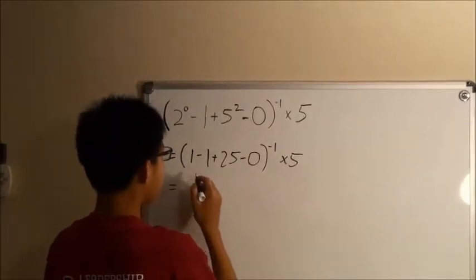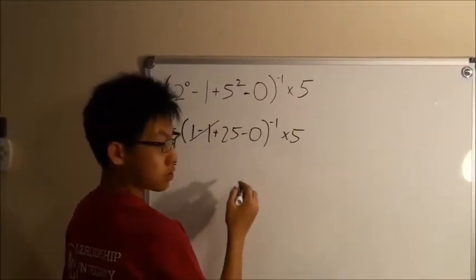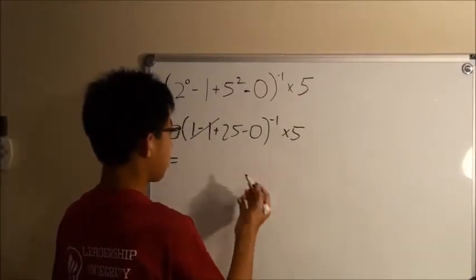Since it's 1 minus 1, they cancel out and become 0, and the rest is just 25 minus 0, which is obviously 25.